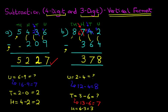And lastly, we've got the thousands column. We've got eight minus zero. The answer is eight. Therefore, 8,742 minus 364 is 8,378.